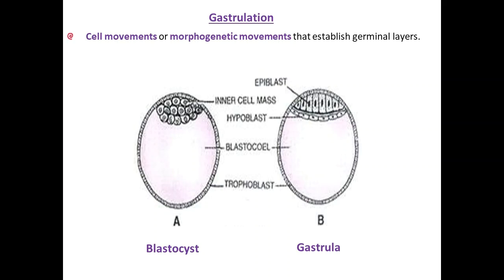Quick review: what is the difference between blastocyst and gastrula? The blastocyst is a single-layered embryo that was formed in the seventh stage and undergoes implantation. The gastrula is a two-layered embryo - the inner cell mass differentiates into epiblast and hypoblast. This happens after implantation, and from here the germ layers will be formed.